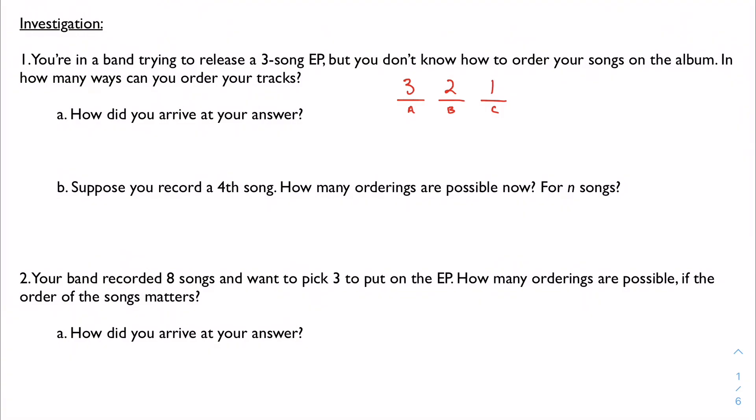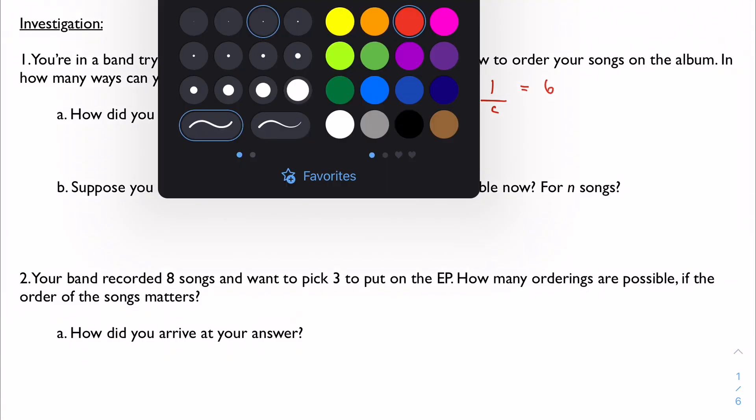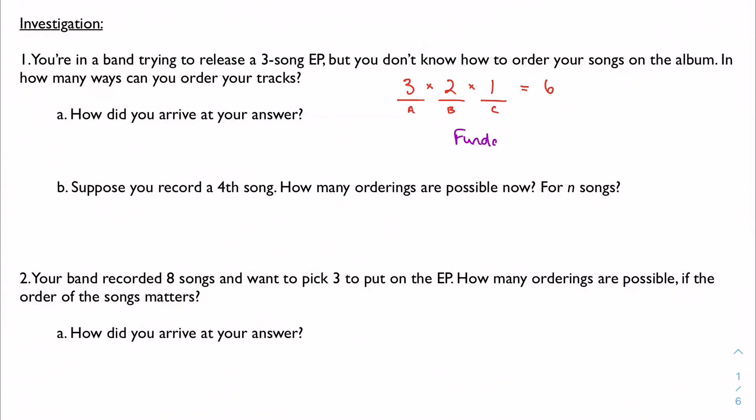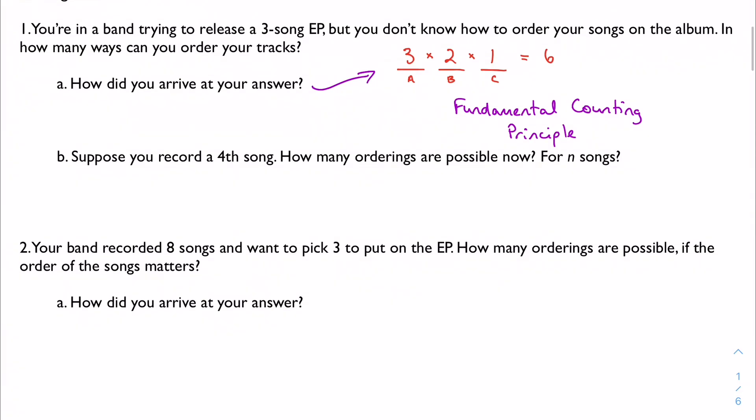In order to do this, we can multiply our options together to get six. And this is what we call the fundamental counting principle. This method of multiplying our options together. So how do we arrive at our answer? We did it up here. Suppose we record a fourth song, and we want to include that fourth song on the album. How many orderings are possible now?